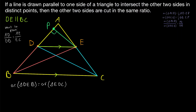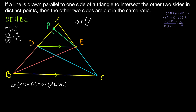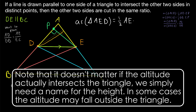Now we want to get segments AE and EC involved. Instead of letting AD be the base of triangle AED, let's let AE be the base. The area of triangle AED is then one-half times AE times the height — the perpendicular distance from D to the line containing AE. Call that altitude DQ, meeting the base at point Q. So the area of triangle AED is one-half times AE times DQ.